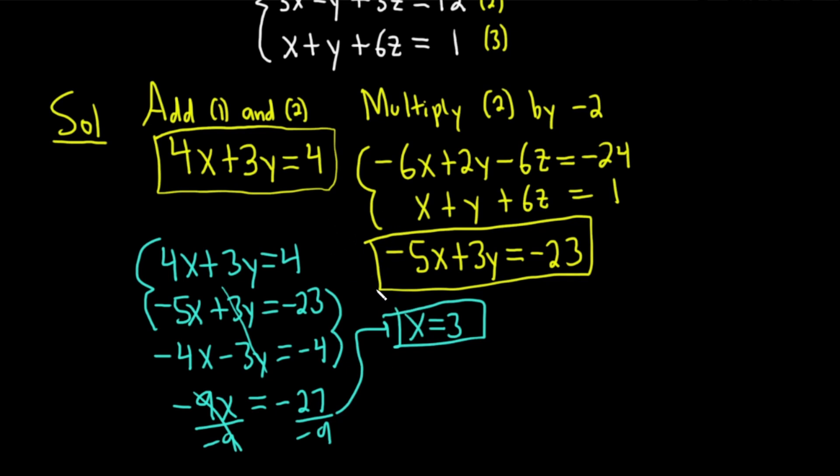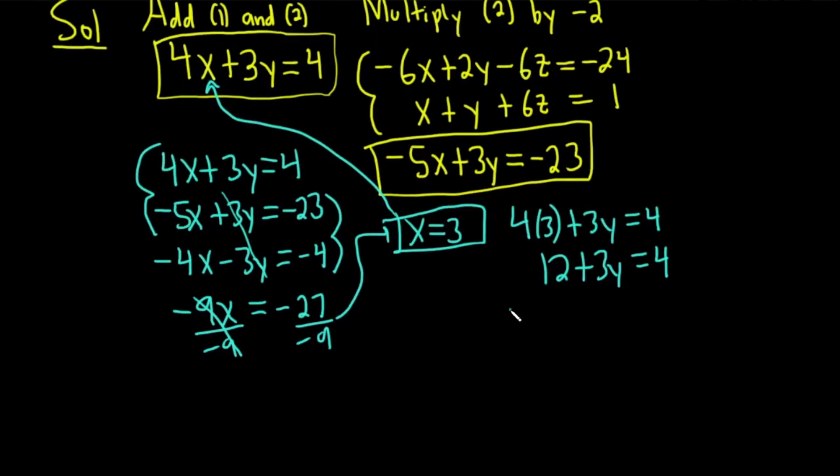Now we have to find the other variables. Let's take this and plug it into this equation. So we'll get 4 times 3 plus 3y equals 4. Plugging in x into 4x plus 3y equals 4. This is 12 plus 3y equals 4. Then subtract the 12, so that will give us 3y equals negative 8. And then divide by 3 and you get y equals negative 8 thirds.